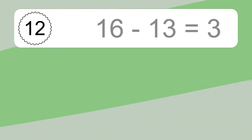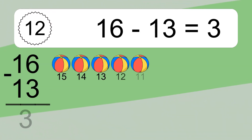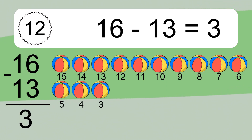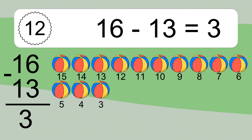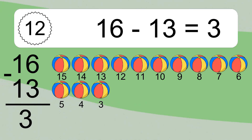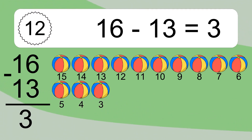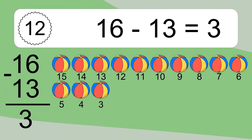16 minus 13 equals what? 16 minus 13 equals 3. Let's count it. 15, 14, 13, 12, 11, 10, 9, 8, 7, 6, 5, 4, 3.